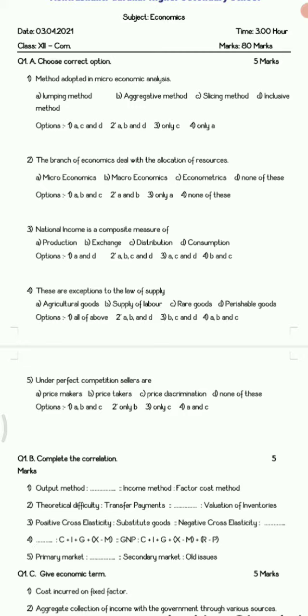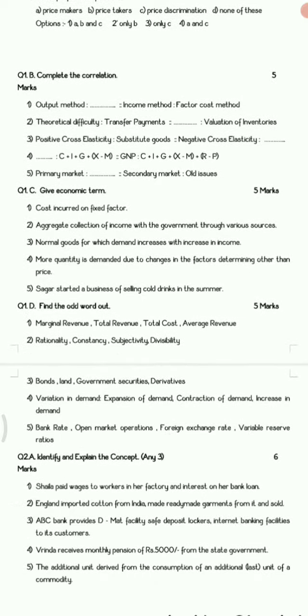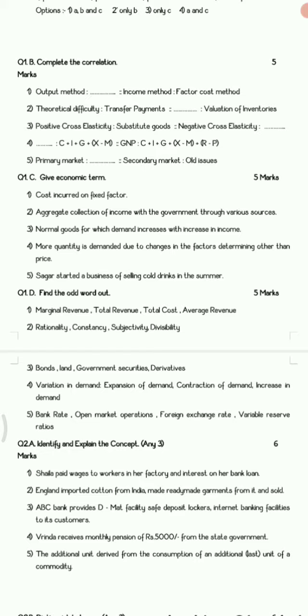Choose the correct option which has 4 options for 5 marks. Then we have complete the correlation which are total 5, which consists of total 5 marks. Then we have give economic term, it carries total 5 marks and last is section D, find the odd word out. The odd man out you need to remove, that carries 5 marks.